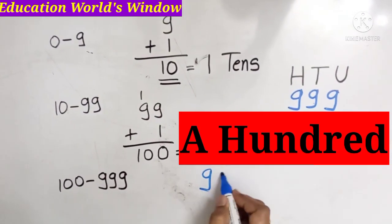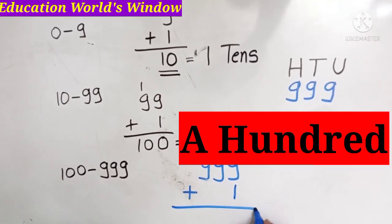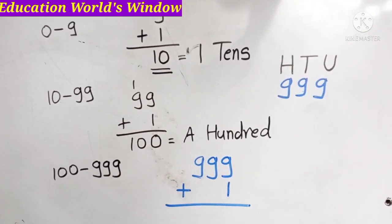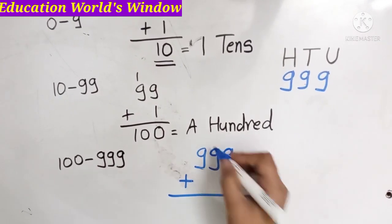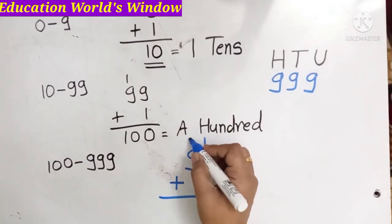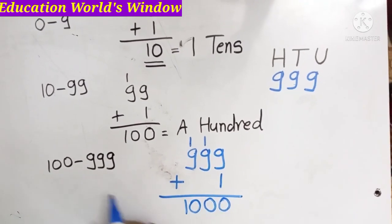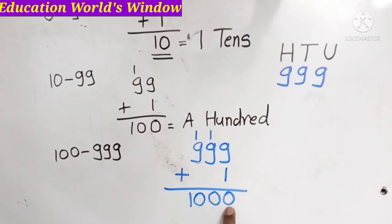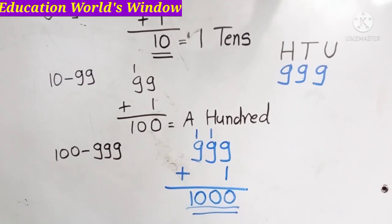Here is 999. 9 plus 1 is 10 — 0, carry 1. 9 plus 1 is 10 — 0, carry 1. So we go from 3-digit numbers. But this new number has 1, 2, 3, 4 digits — it is a 4-digit number!